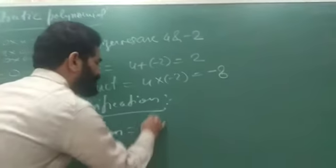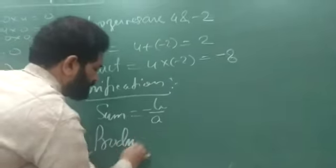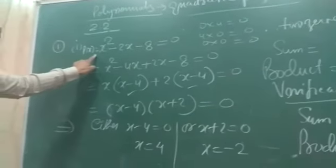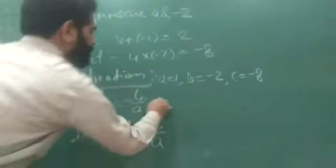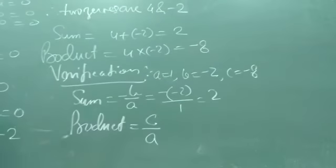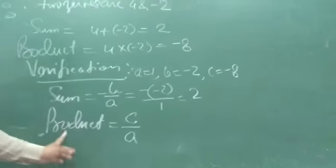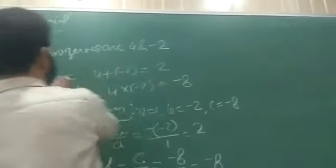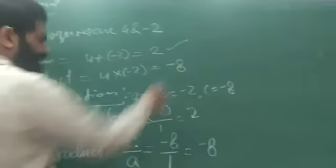The formula for sum is −b/a and for product is c/a. Here the coefficient of x² is a = 1, the coefficient of x (with sign) is b = −2, and the constant term is c = −8. So sum = −b/a = −(−2)/1 = 2, and product = c/a = −8/1 = −8. We can see that sum is 2 in both cases, and product is −8 in both cases.